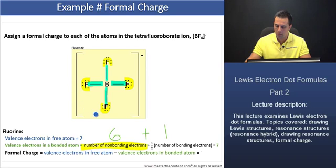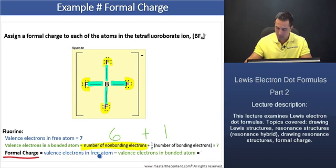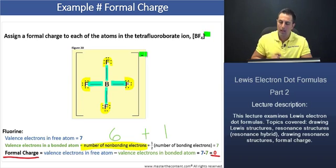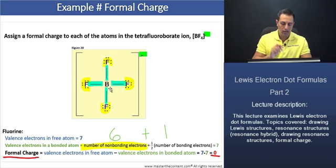Because each of these fluorine atoms is equivalent to one another, the formal charge for the fluorines is simply the valence electrons in a free atom (seven) minus the valence electrons in the bonded fluorine atoms (seven), which equals zero. We should note that the sum of the formal charges for all atoms should equal the charge on the ion. The charge on our ion is negative one. Therefore, since fluorine's formal charge is zero, that negative one formal charge must be on the boron atom.